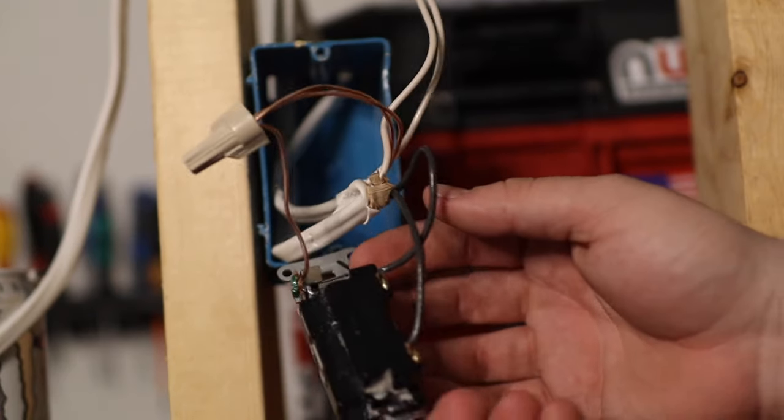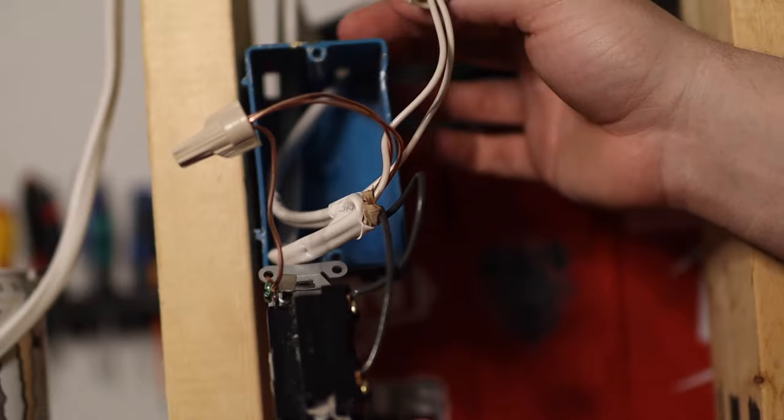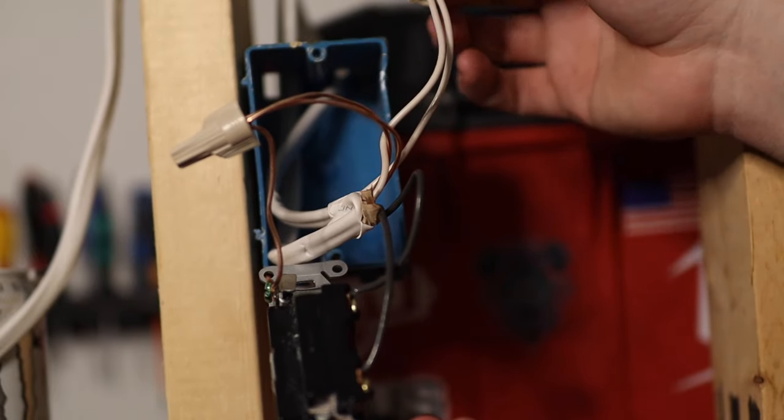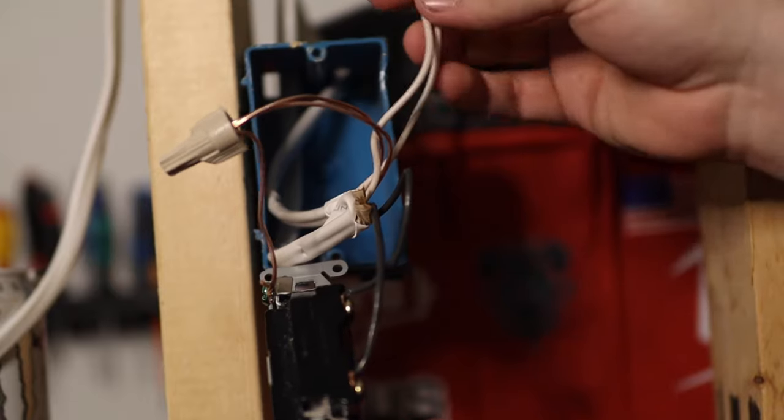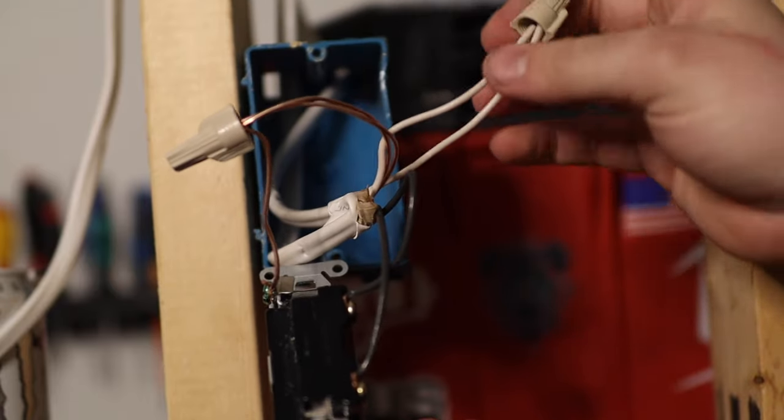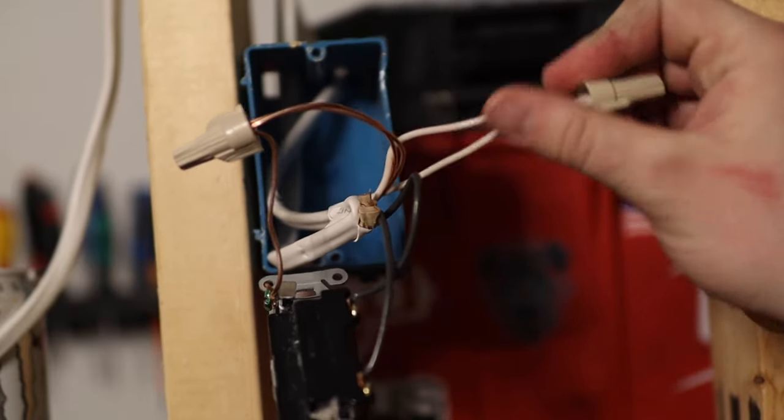Alright, now it's important to note that there's only two sets of wires that are coming in here. So there's two blacks, two whites, and two bare grounds. Alright, so this is pretty easy, but this is the important part as well.